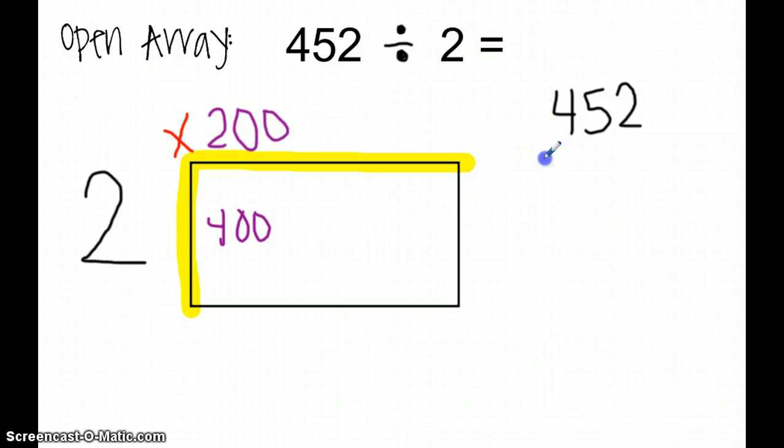I will then take my 400 and subtract it from 452. 452 minus 400 leaves me with 52. I am then going to look at my 52 and decide the next place I'm going to multiply by. So now I'm going to do multiples of 10.